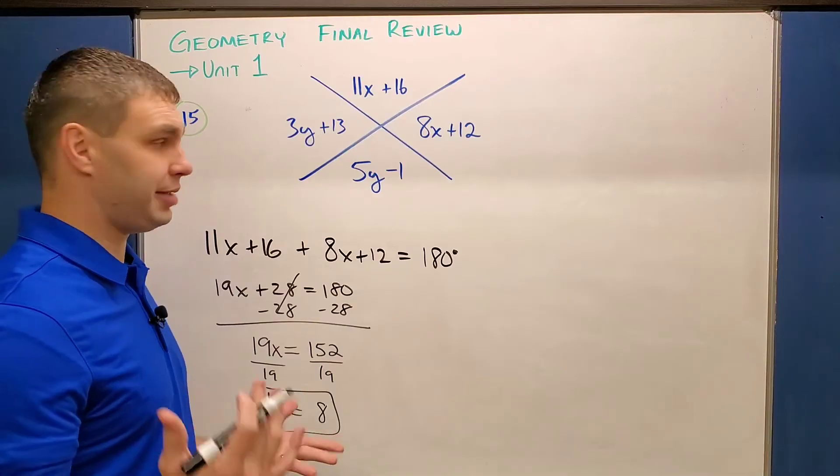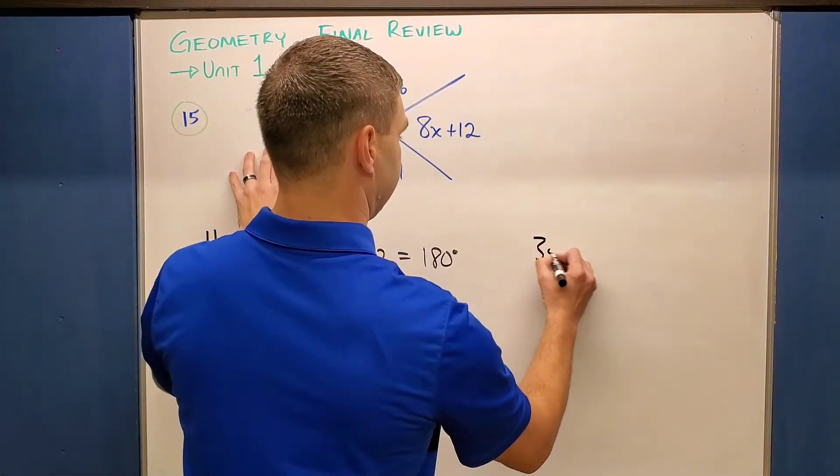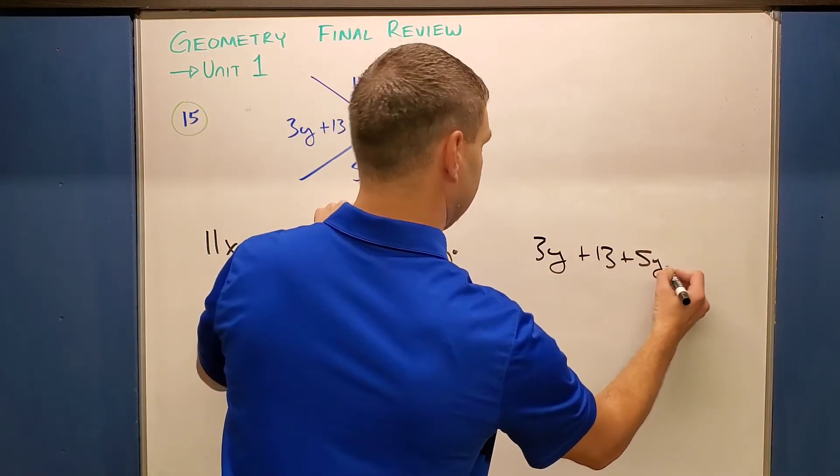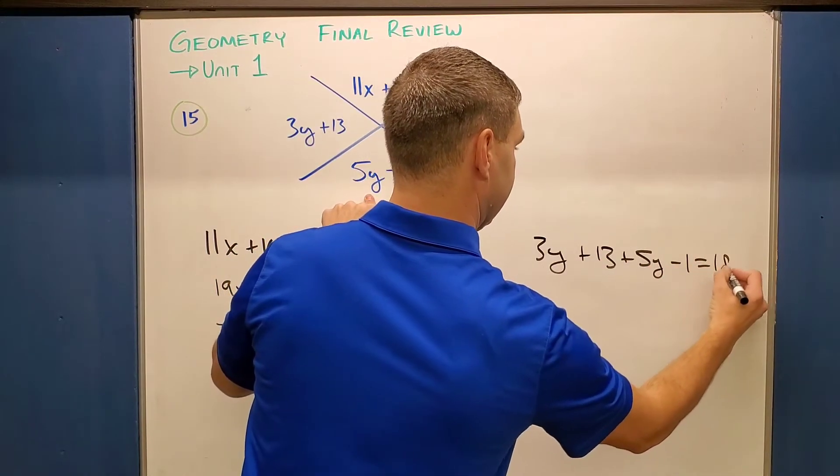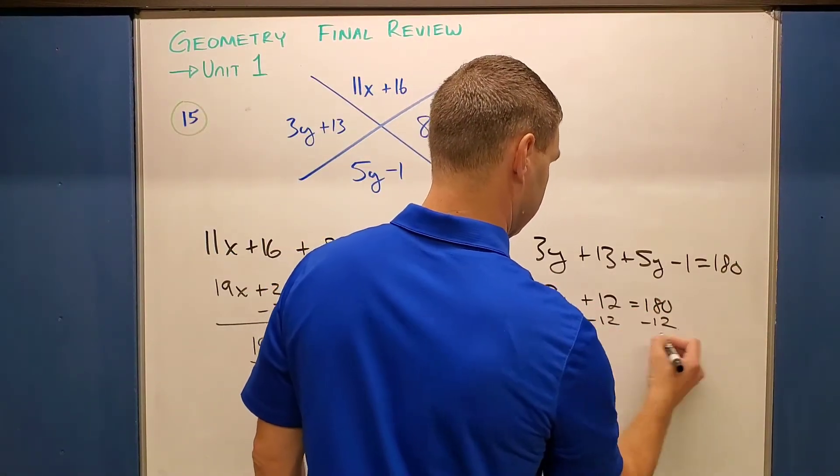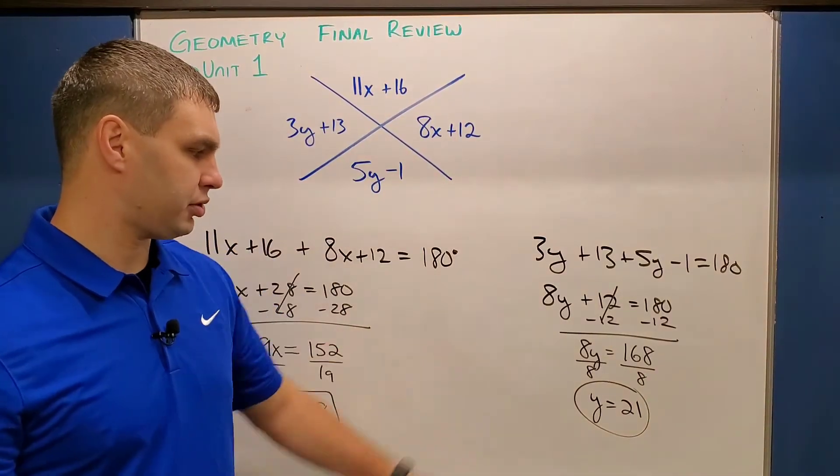And then for the Y value, same idea. We're going to add these up and set them equal to 180 like this. 3Y plus 13 plus 5Y minus 1 equals 180. Again, I'll solve this real quick for you. And in this case, Y equals 21.